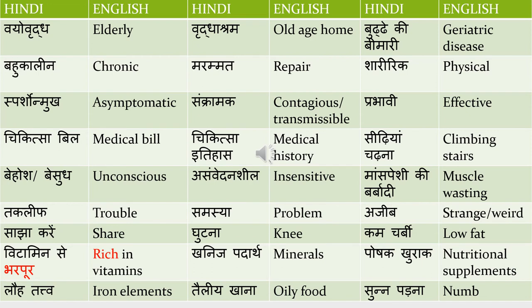Mas peshi ki barbadi means muscle wasting. There are some diseases like motor neuron disease in which muscle wasting happens. In that case you would say: 'Motor neuron bimari mein mas peshi ki barbadi ho jaati hai.'